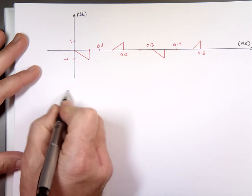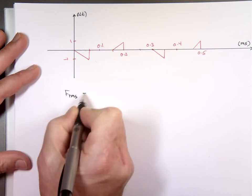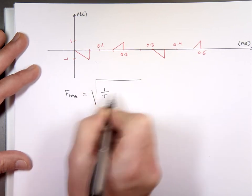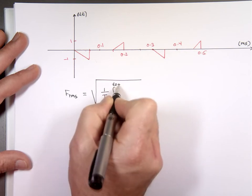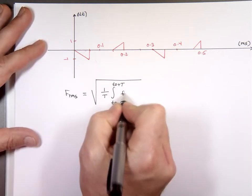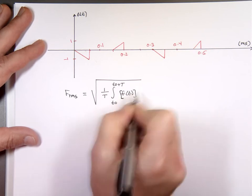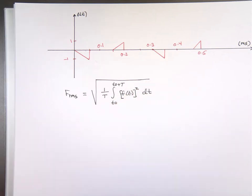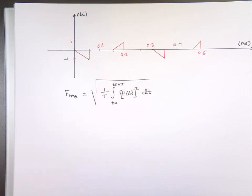So what is F-RMS? The definition is the square root of 1 over the period, times the integral over the full period. You can go from 0 to T, or any starting point. That's the definition of RMS value for any function — you take that function squared, integrate over a full period, and divide by the period.